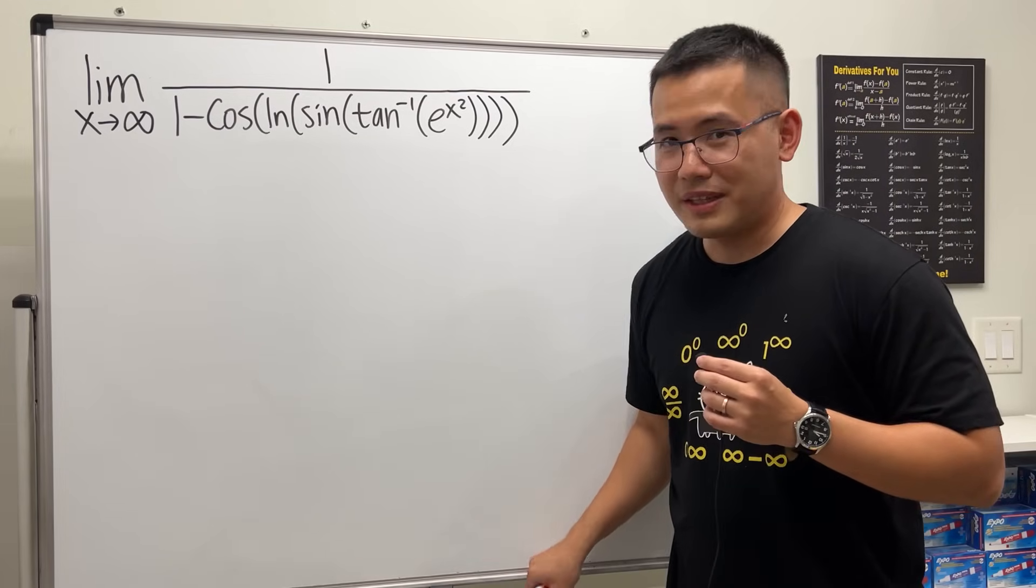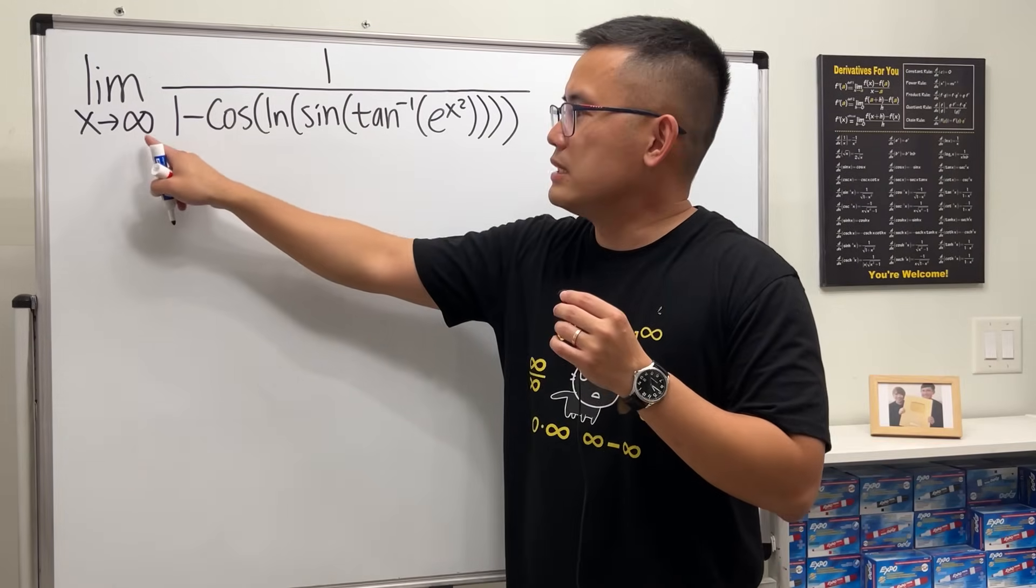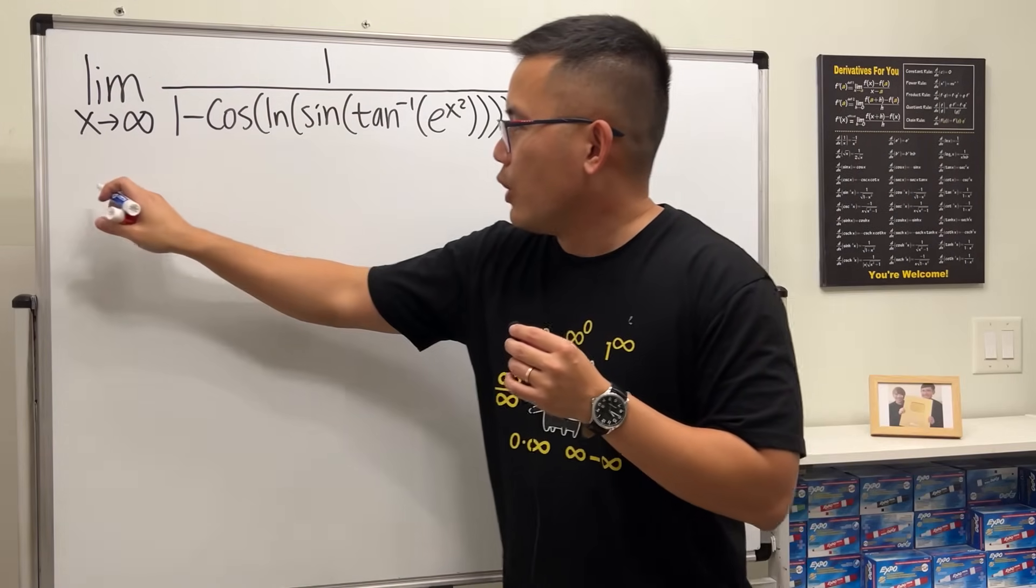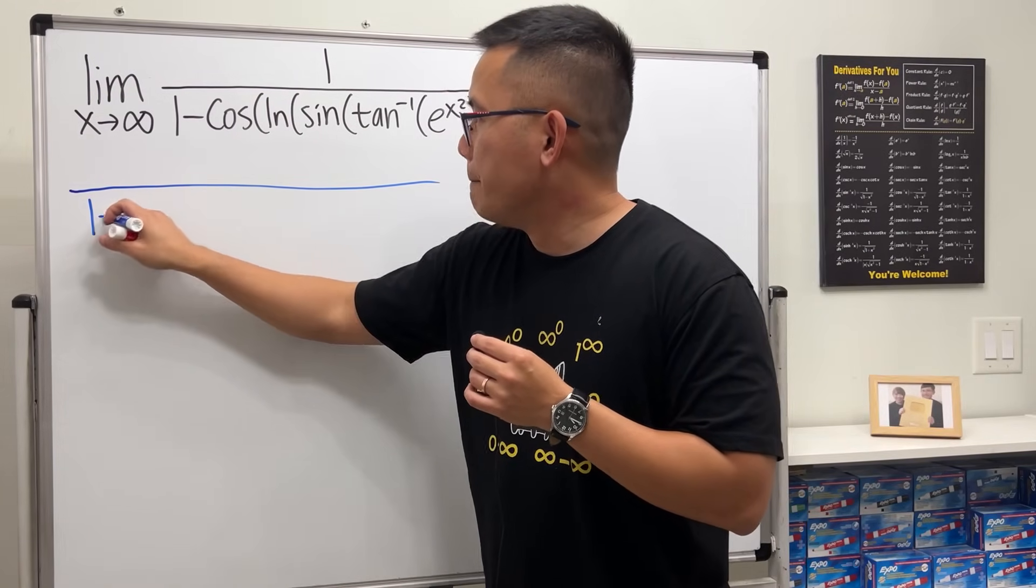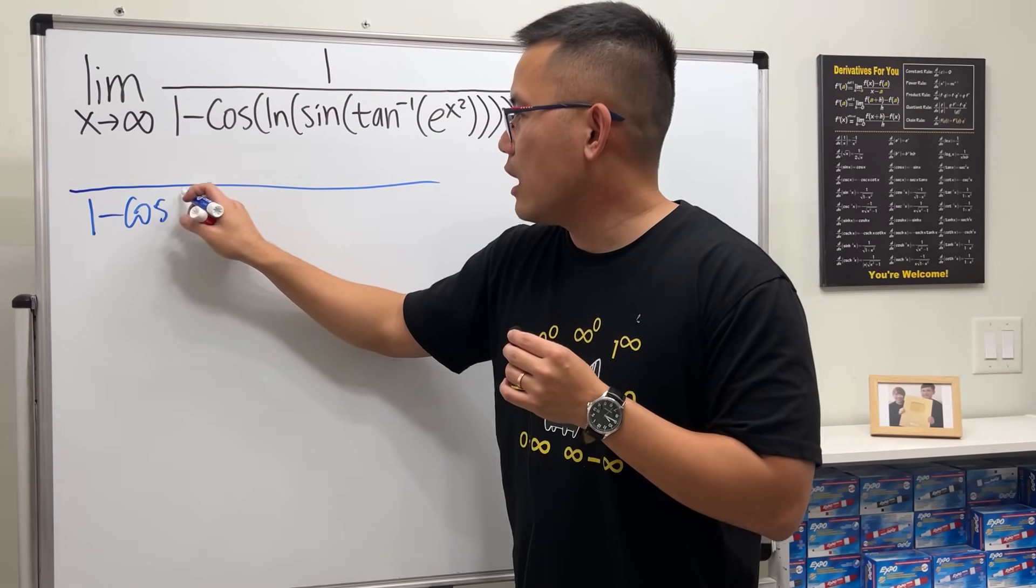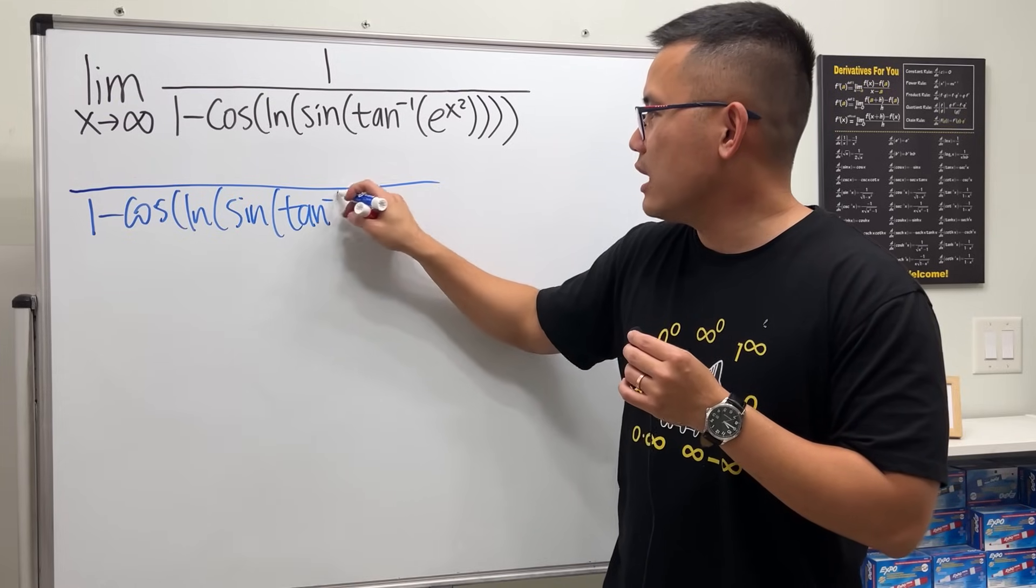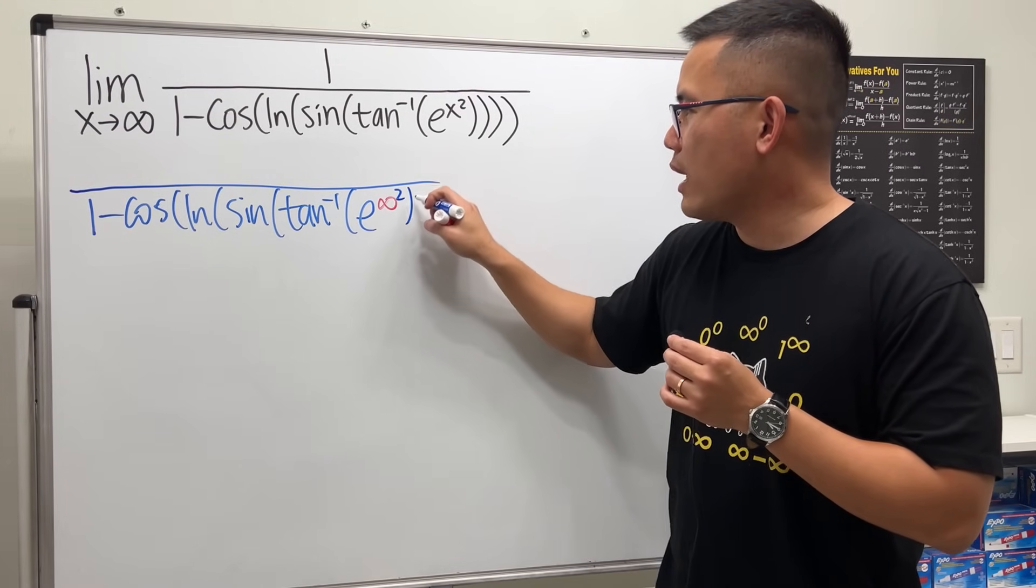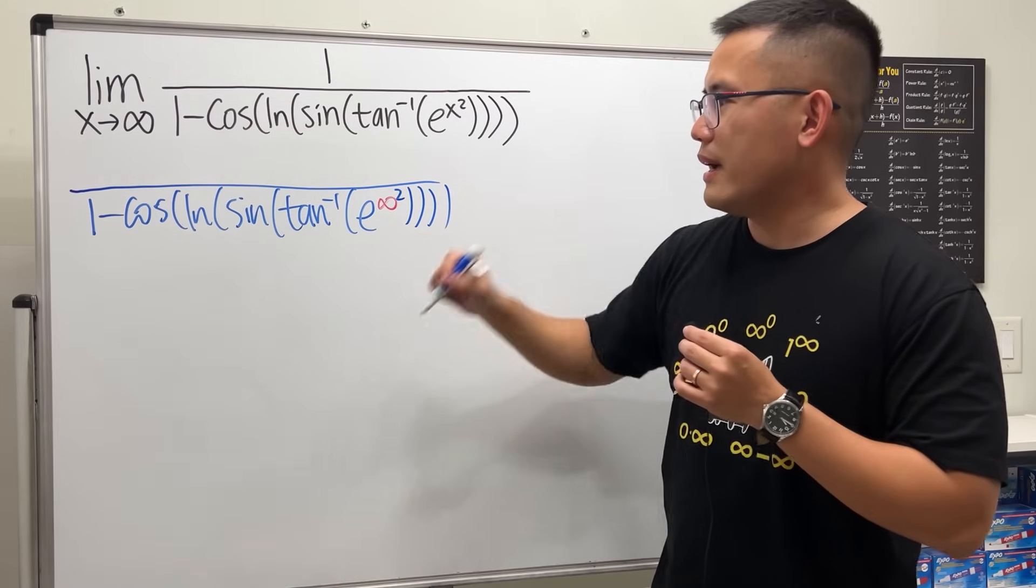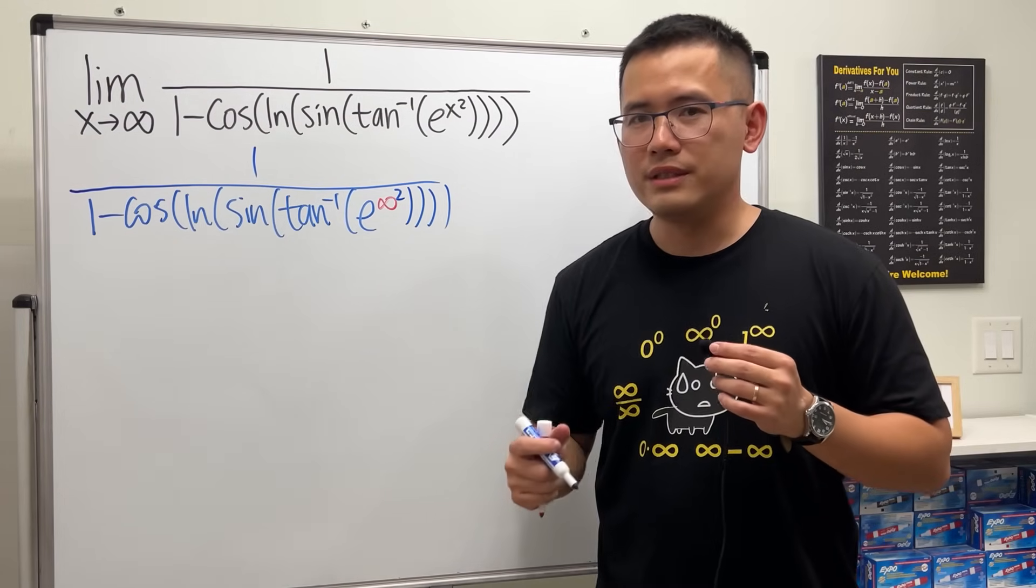Alright, so let's just do the YouTube business. Let's put infinity into this x here and hopefully we can reason things out along the way. We're looking at 1 minus cosine of ln of sine of inverse tangent of e to the infinity squared power, with one on the top.